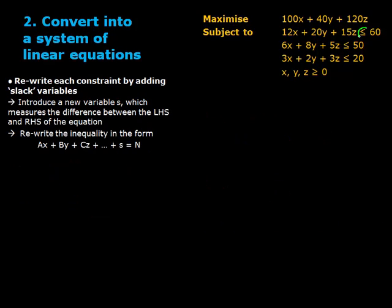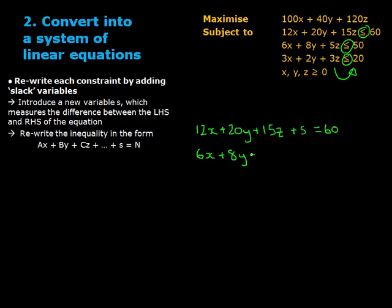Step 2: Convert into a system of linear equations. For each constraint, we must change it from an inequality to equality. To do this, we add a slack variable representing the difference between the left and right-hand side of the equation. We add a new slack variable for each constraint. For the first constraint, we add s and change the equation to an equality. For the second constraint, we add t and make that an equality too. Finally, we do the same for the third constraint and add the slack variable u.